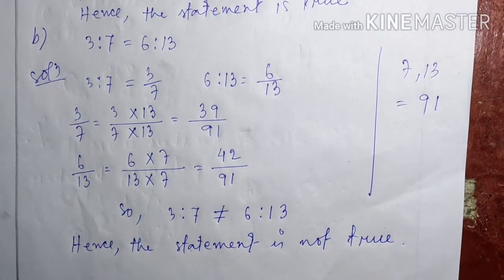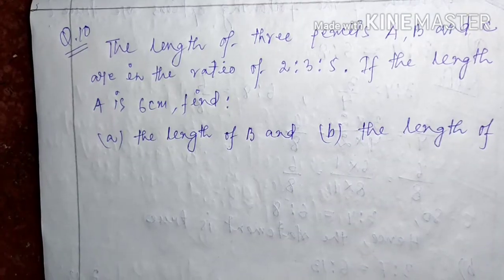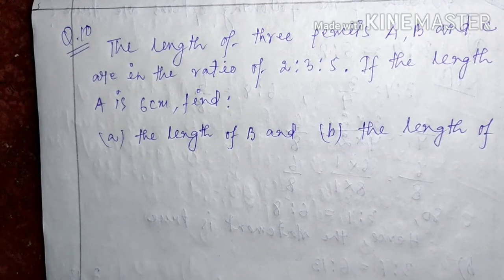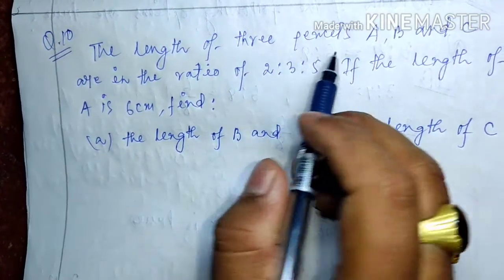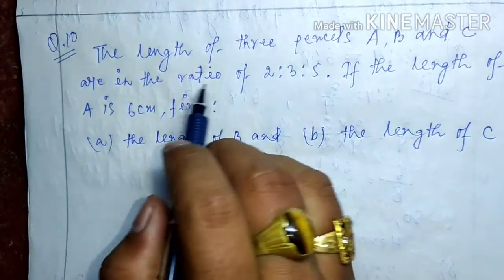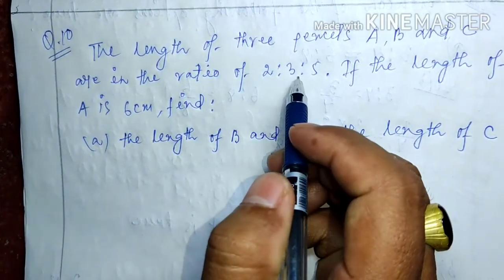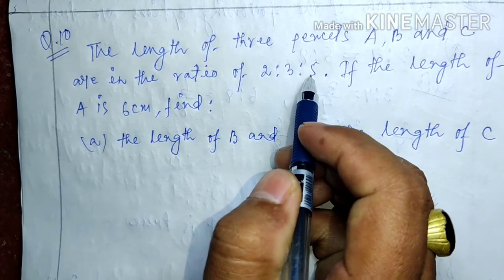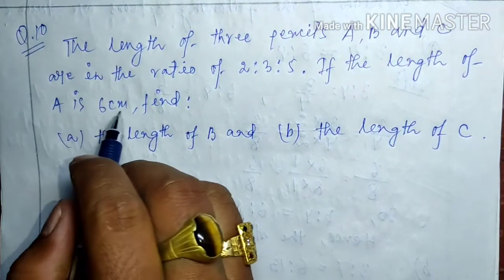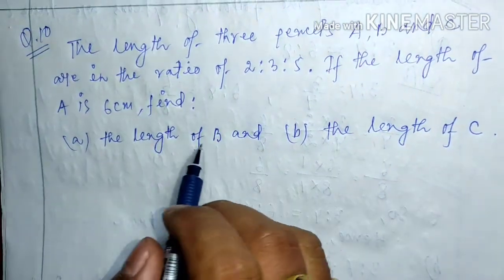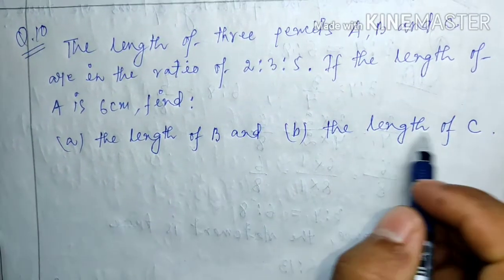Question number 10. The length of three pencils A, B, and C are in the ratio of 2 is to 3 is to 5. If the length of A is 6 cm, find the length of B and the length of C.